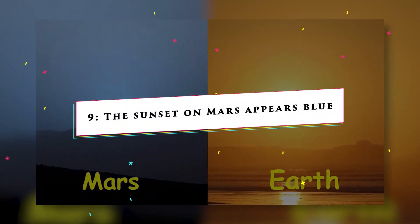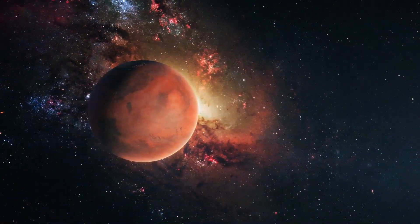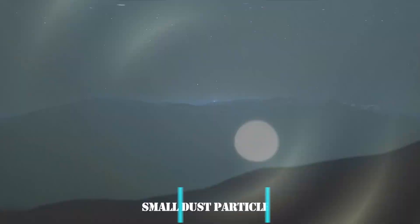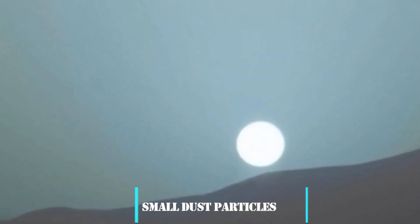The sunset on Mars appears blue. Mars, a far-off red planet, has a sunset that turns the sky in ethereal hues of blue. The secret underlying this fascinating occurrence is small dust particles, as NASA's discovery reveals.